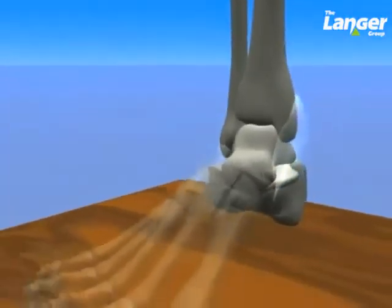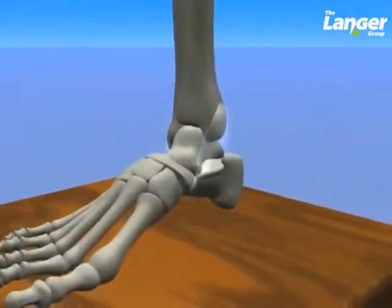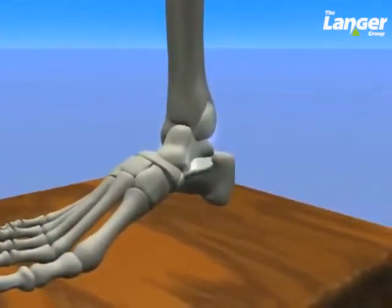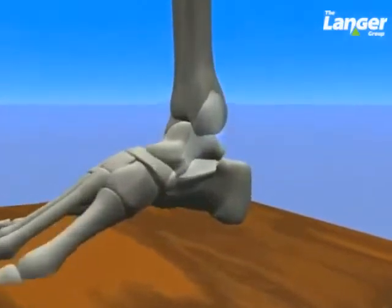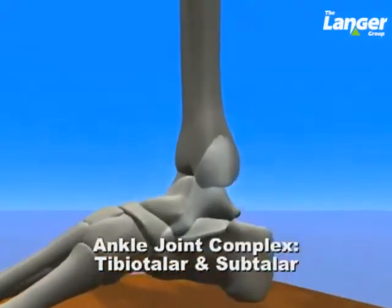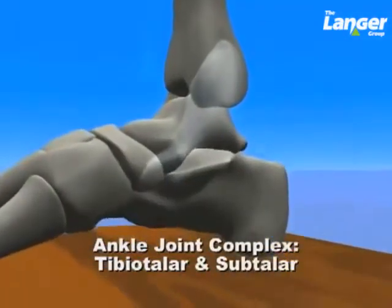This biomechanical complex consists of the bones of the hind foot — talus and calcaneus — and two anatomically distinct joints: the ankle, or tibiotalar joint, and the subtalar joint.